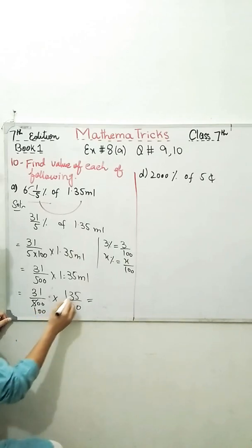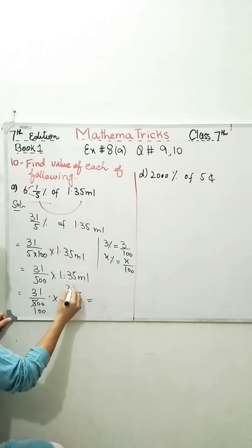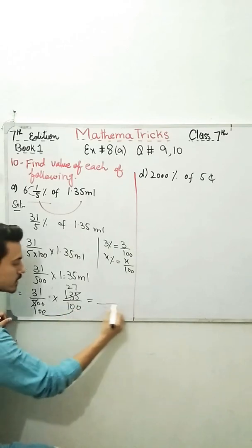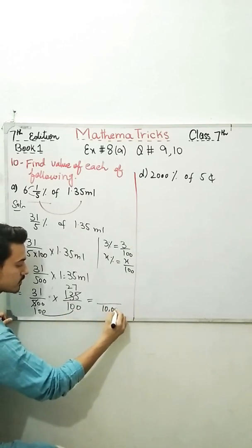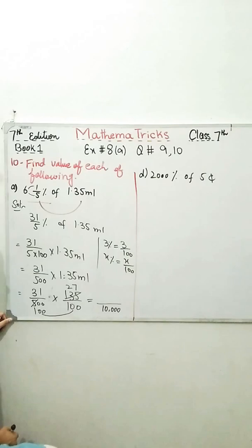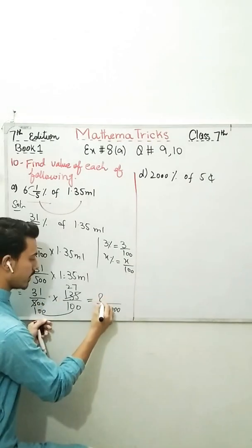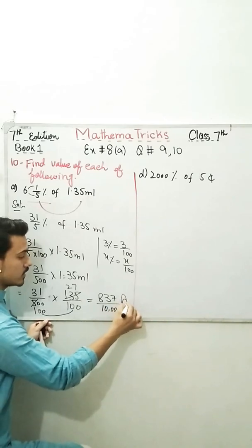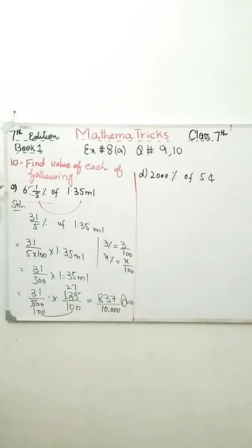We can write it like 31 over 500 into 135 over 100. I just removed this decimal sign and I got 100 here. You can multiply, you can cut out, you can do whatever you want. And the answer will be 27 over 10,000. That's the value I need to find. Part A.